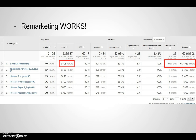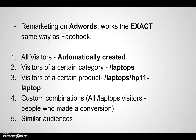I'm going to show you really quick how this works. Remarketing on AdWords works the exact same way as Facebook. We have all visitors, which is automatically created. We can have visitors of a certain category — let's say laptops. We can have visitors of a certain product — laptops, HP 11 laptop. We can have custom combinations: all people that visited the laptops category minus those who made the conversion. And we can have similar audiences.